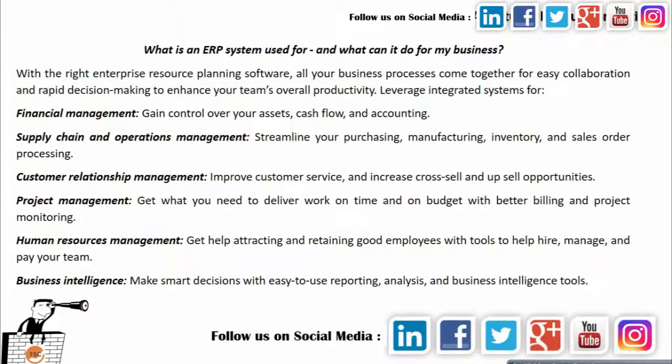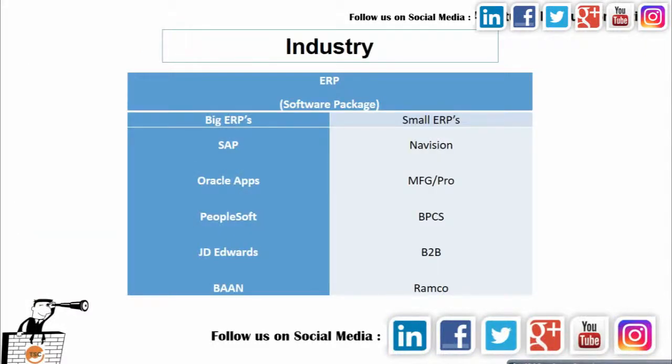So what is an ERP system used for and what can it do for your business? With the right enterprise resource planning software, all your business processes come together for easy collaboration and rapid decision making to enhance your team's overall productivity. Key capabilities include: finance management — gain control over your assets, cash flow, and accounting; supply chain and operations management — streamline purchasing, manufacturing, inventory, and sales order processing; customer relationship management — improve customer service and increase cross-sell and upsell opportunities; project management — deliver work on time and on budget with better billing and project monitoring; human resource management — attract and retain good employees with tools to hire, manage and pay your team; and business intelligence — make smart decisions with easy-to-use reporting, analysis, and business intelligence tools.